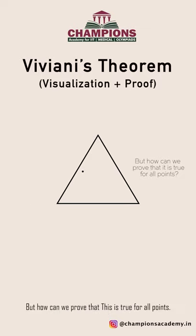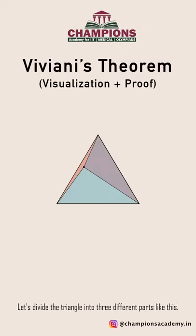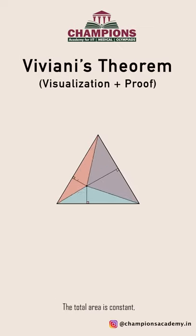But how can we prove that this is true for all points? Let's divide the triangle into three different parts. The total area is constant.